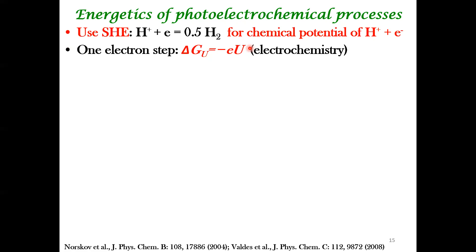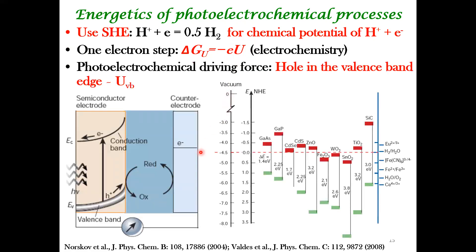The main question for photoelectrochemical systems is: what is the relevant U? To answer this, you have to look at what is happening in a photoelectrochemical system. An electron-hole pair is created, and the hole gets transferred to some species — water, in this case, in the electrolyte. Hole transfer from the semiconductor electrode to the electrolyte is equivalent to electron transfer from water to the hole.